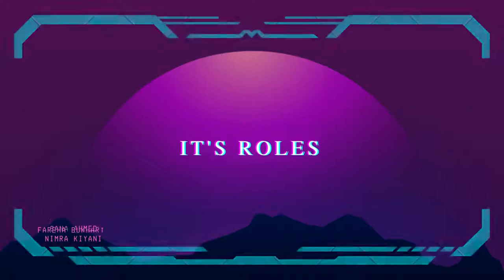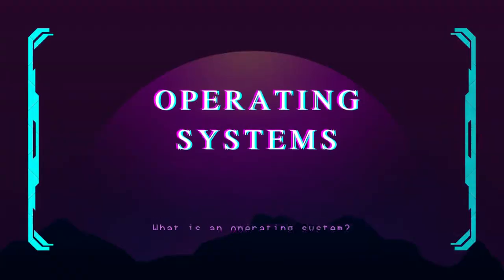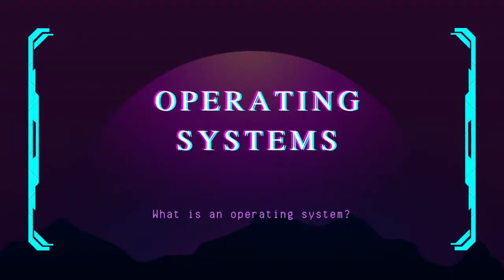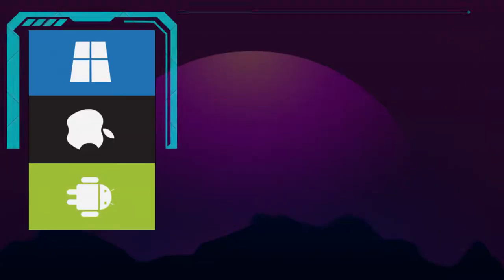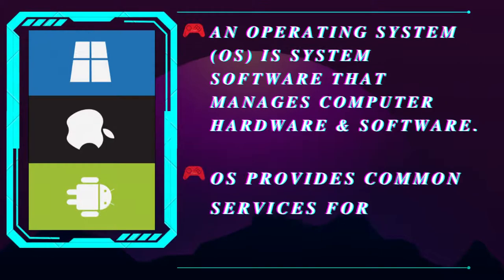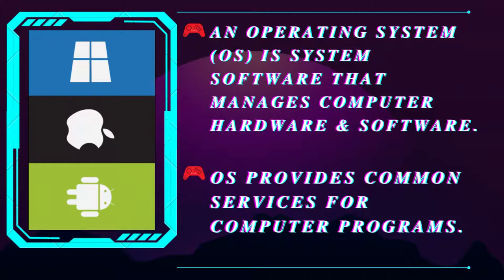What is an operating system? An operating system is a system software that manages the computer hardware and software. It actually provides an environment within which programs are executed. Some commonly used operating systems are Windows, Linux, and Android.